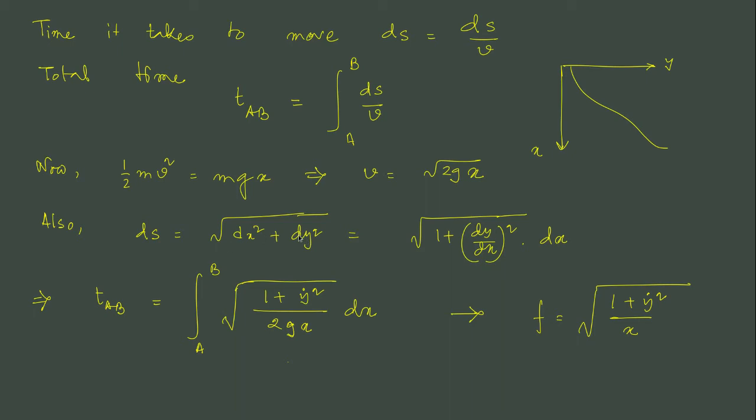What is ds line segment? It is nothing but d x square plus d y square which in calculus we have seen that this can be written as 1 plus d y d x whole square and d x. We substitute that we say y dot is d y d x. So, what we got is 1 plus y dot square divided by 2 g x and d x.